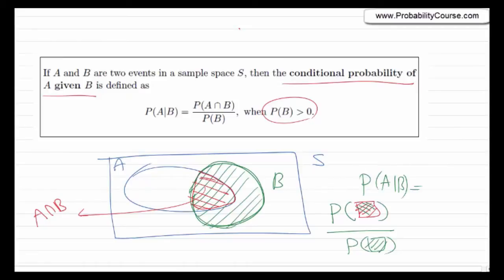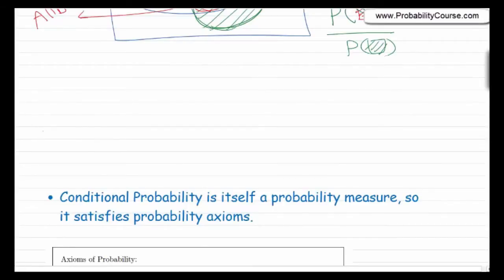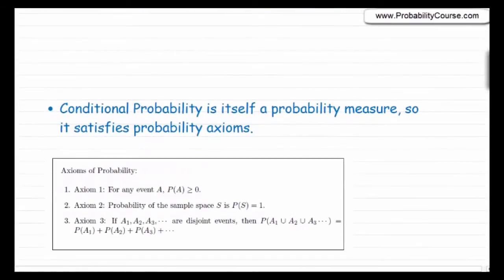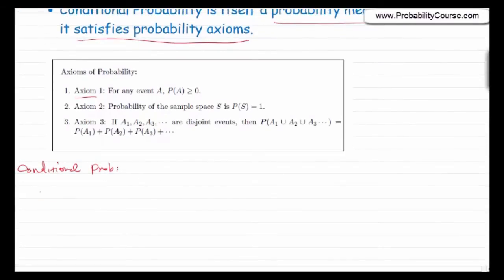An important point: conditional probability is itself a probability measure — it satisfies all probability axioms. Axiom 1: P(A|B) ≥ 0, since conditional probability is always non-negative. It looks like our sample space has changed from S to B.